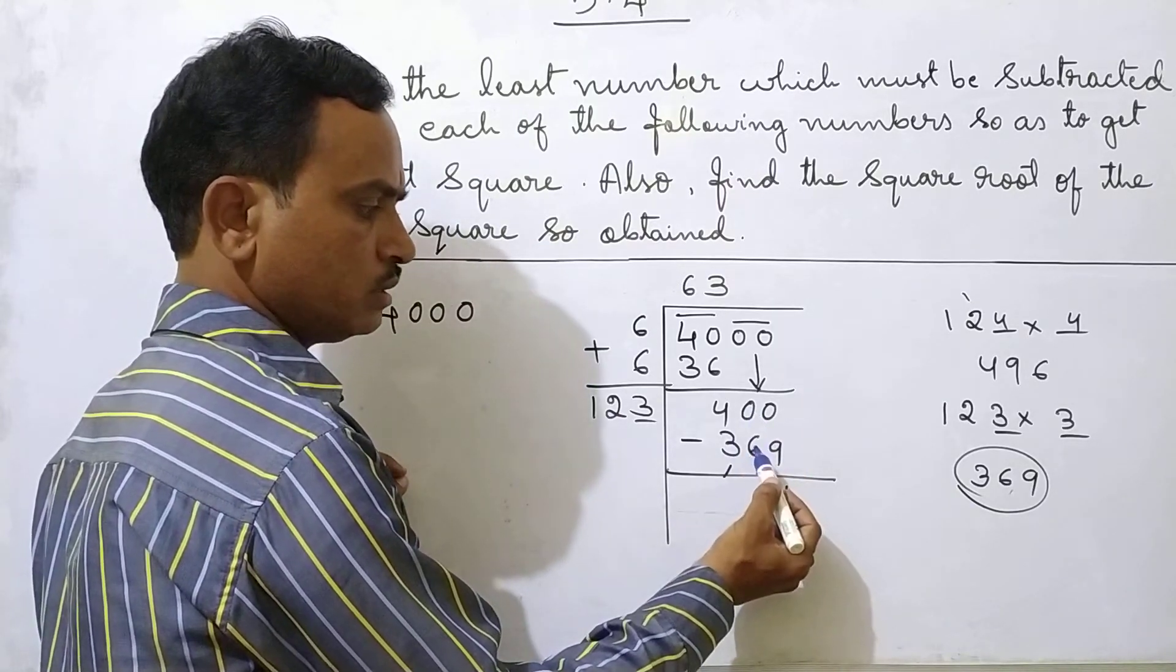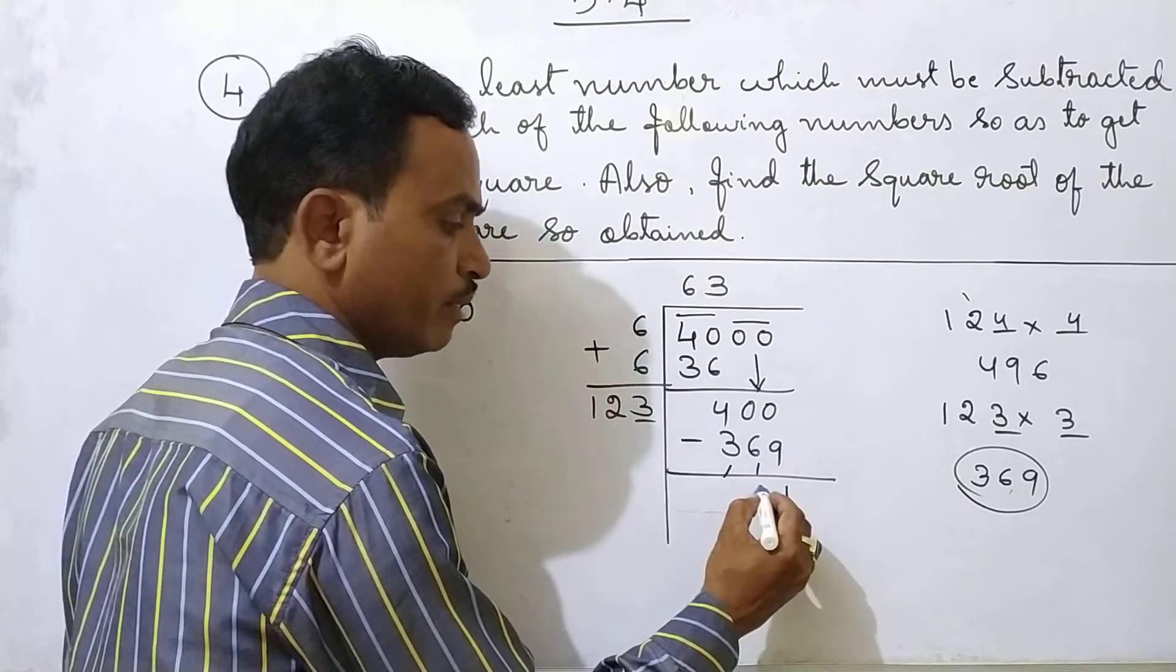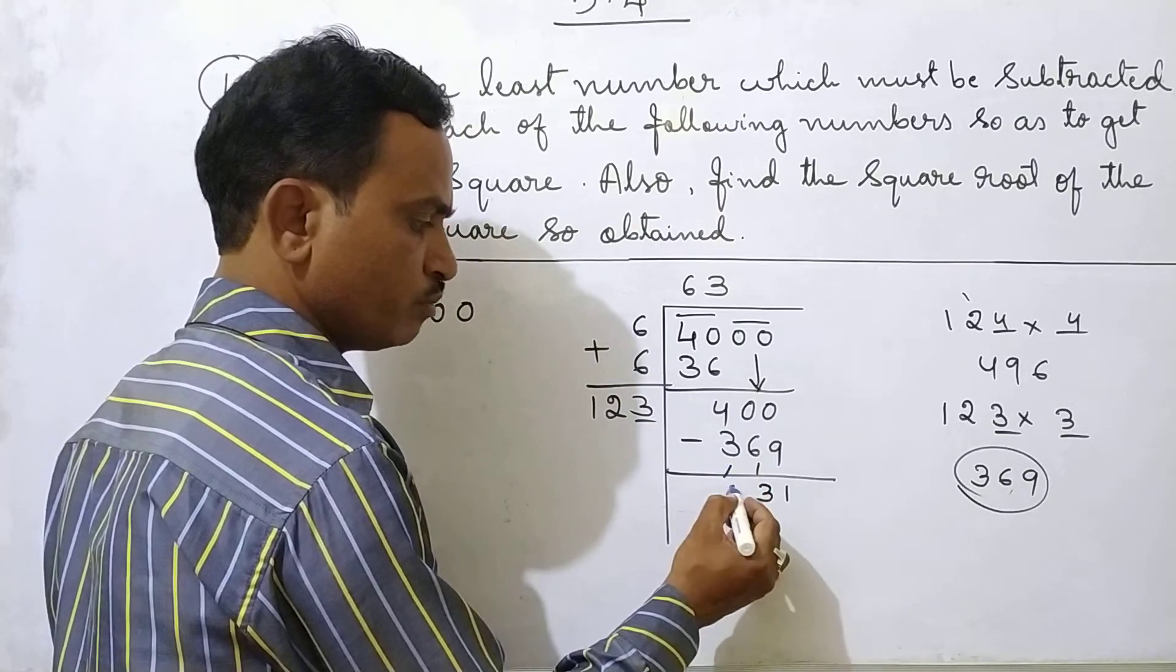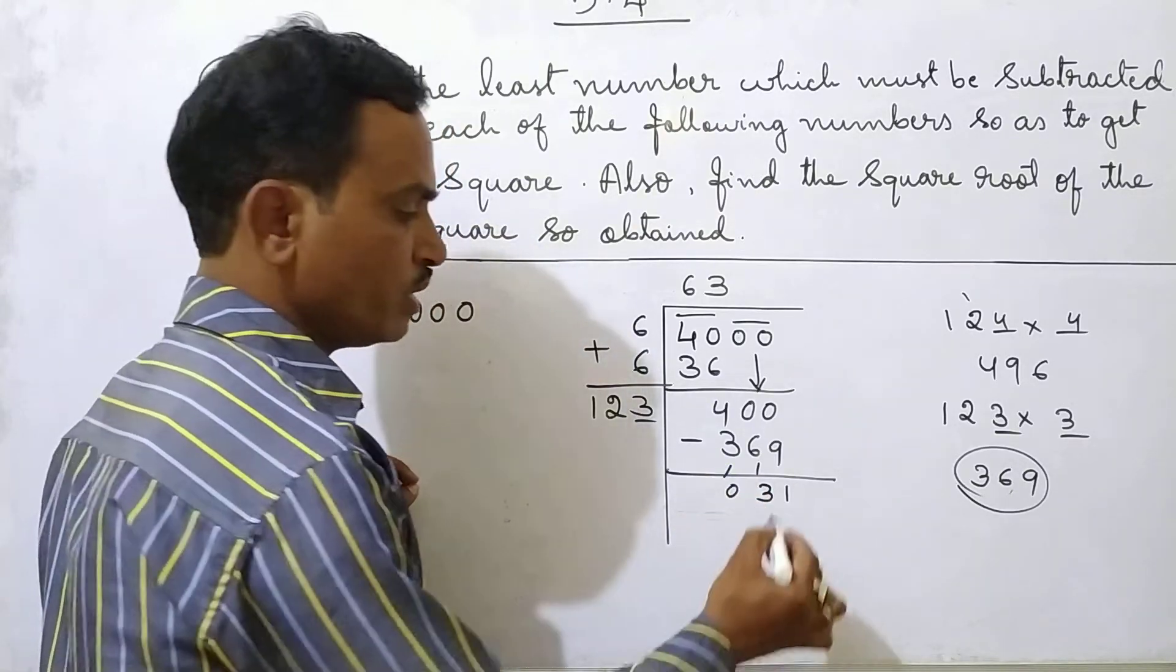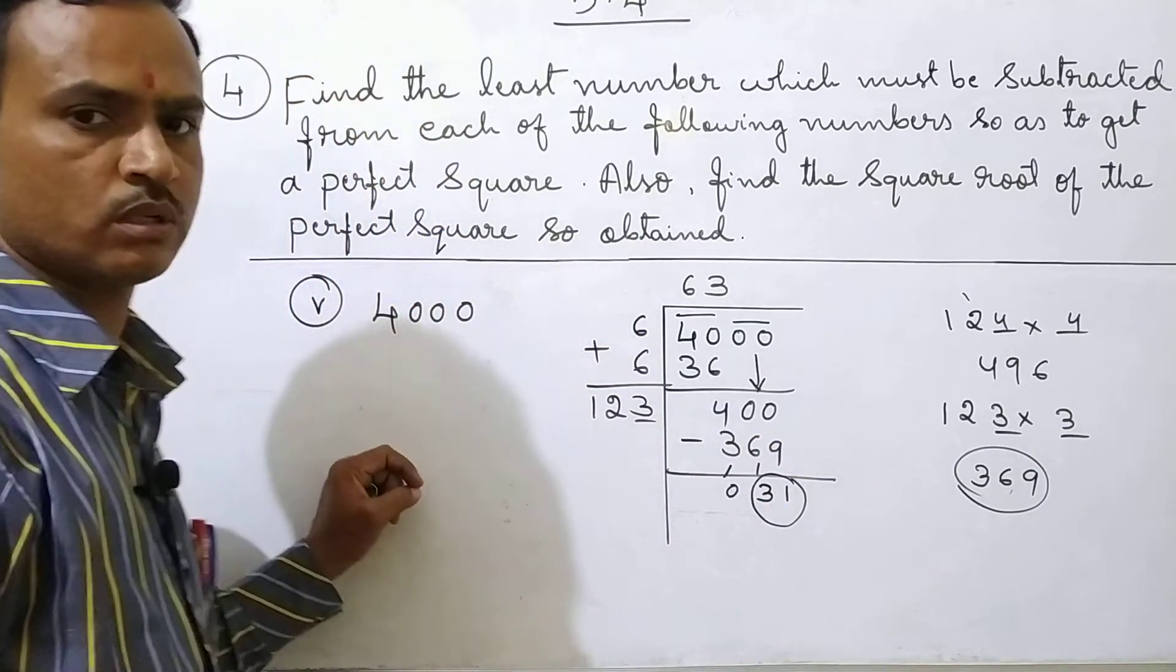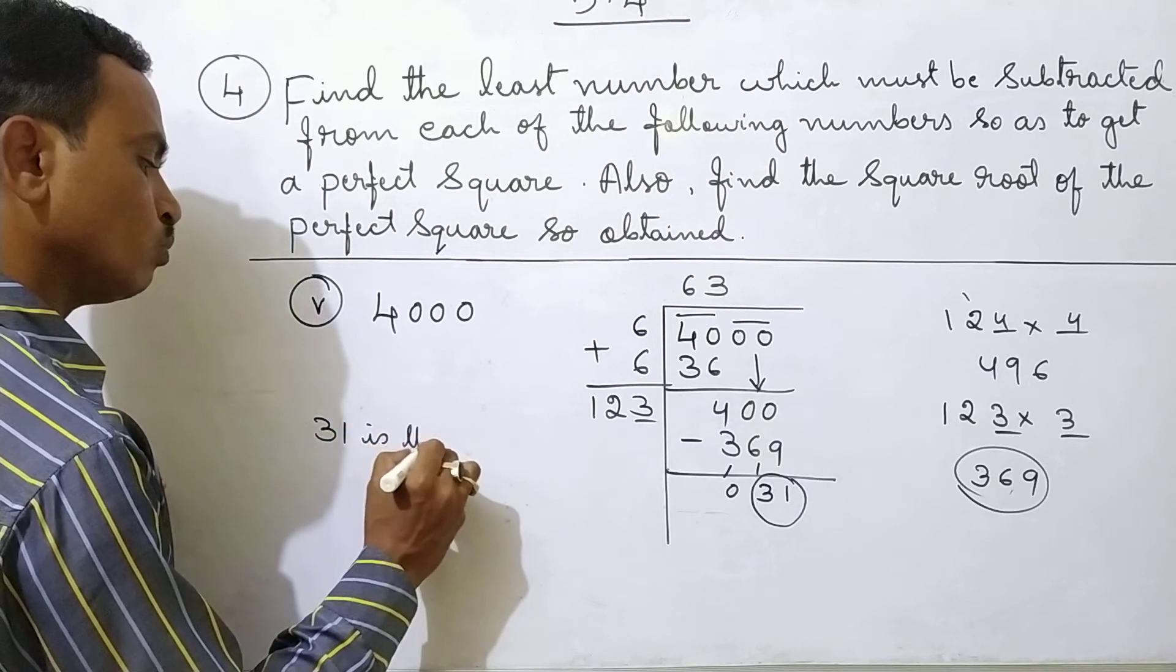10 minus 6 plus 1 is 7. 10 minus 7. 3 remainder. 3 plus 1 is 4. 4 minus 4 it becomes 0. So that means here 31 is the least number. So here 31 is the least number.